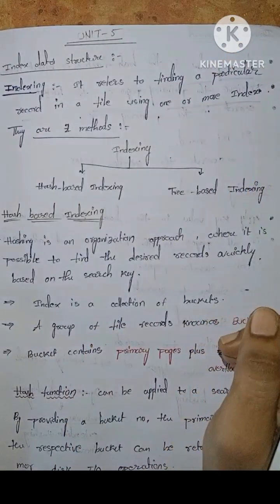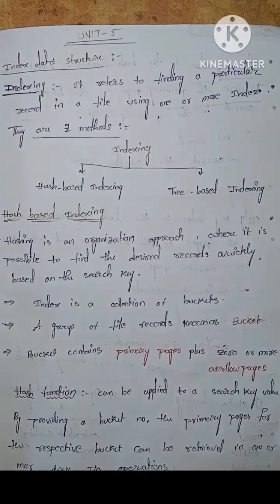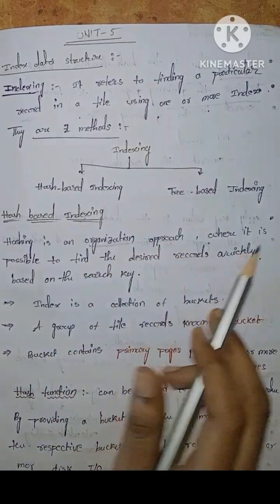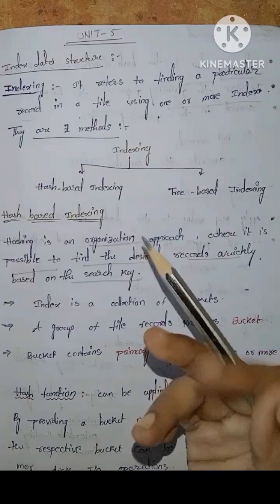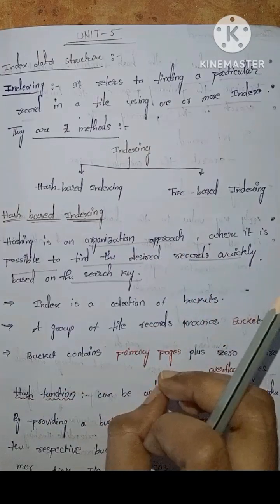Indexes are two types: one is hash-based indexing and tree-based indexing. Hash-based indexing is an organization approach where it is possible to find the desired record quickly based on the search. Hash-based indexing and hashing are already discussed in data structure.